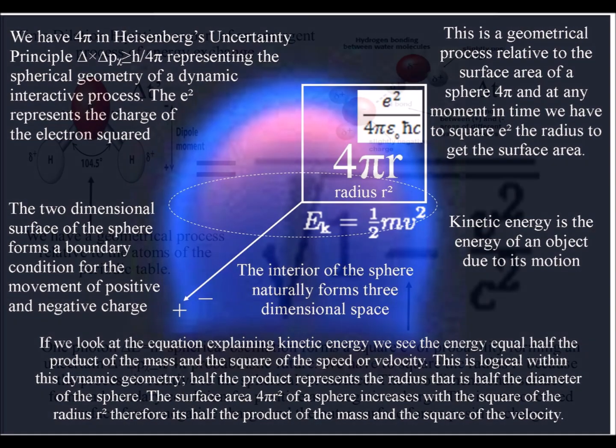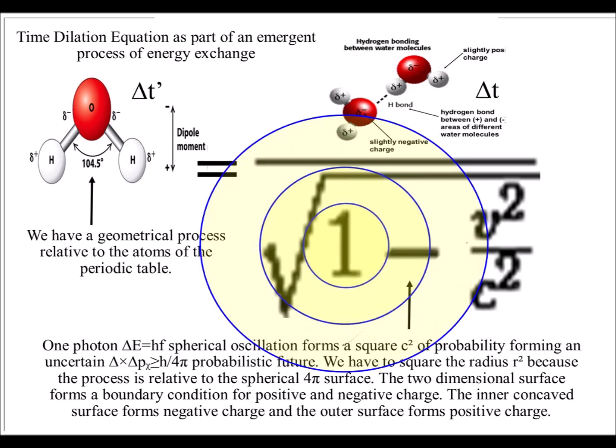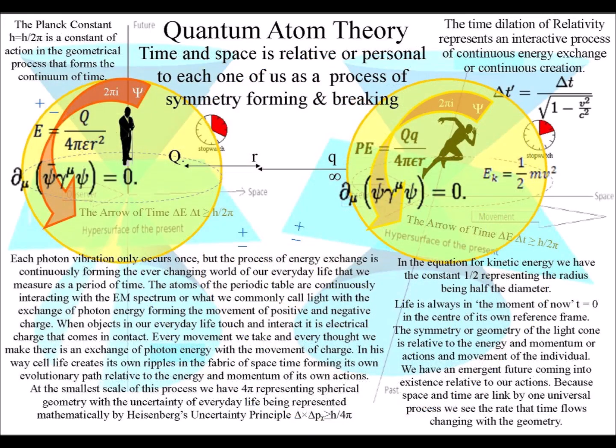This can be seen in the equation, with the number 1 representing one photon spherical oscillation, with velocity and light squared, representing the radius being squared. This process forms an uncertain, probabilistic future that is relative to the energy and momentum of each object or life form.